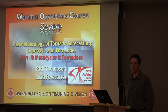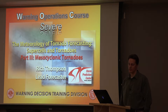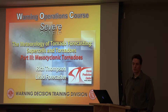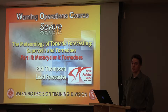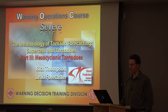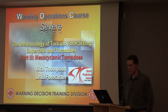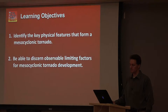Part three of our five-part sequence looking at supercells and tornado genesis. In part one, we considered supercell formation and the development of the mesocyclone. In part two, we looked at non-mesocyclone tornado genesis, which is a simplified version of what we're going to look at here: tornado formation with mesocyclones.